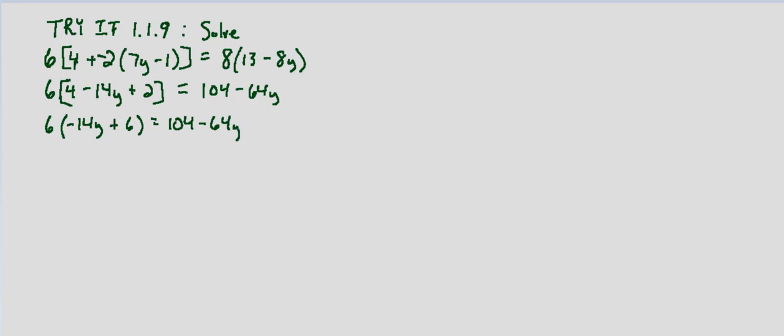6 times negative 14, we can do that the same way that I did the 8 times 13 above. 6 times 10 is 60, 6 times 4 is 24, and then 60 plus 24 is 84. We have to remember this is negative. So negative 84y plus 6 times 6 is 36 equals 104 minus 64y.